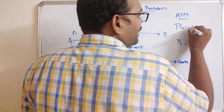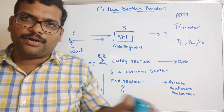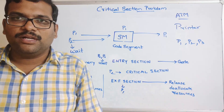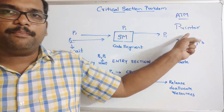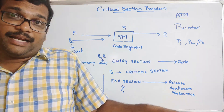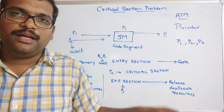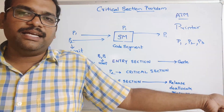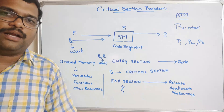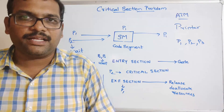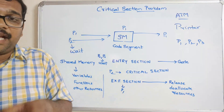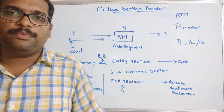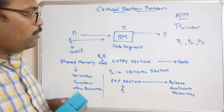Another example is availing a printer service in a network. If there is a network with many systems sharing one printer, at a time only one print job can be processed. If system one sends a print job and system two also sends one at the same time, system two will be in a waiting state until the job from system one completes. Once the task from system one finishes, system two's process will then be executed. At a time only one process completes its execution, and all remaining processes wait.